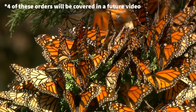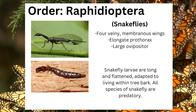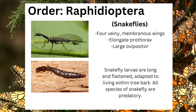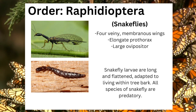Holometabolous insect orders include Raphidioptera, the order of snakeflies, which can be identified by their four veiny membranous wings, their elongate prothorax, and their large ovipositor. Snakefly larvae are long and flattened, adapted to living within tree bark. All species of snakefly are predatory.